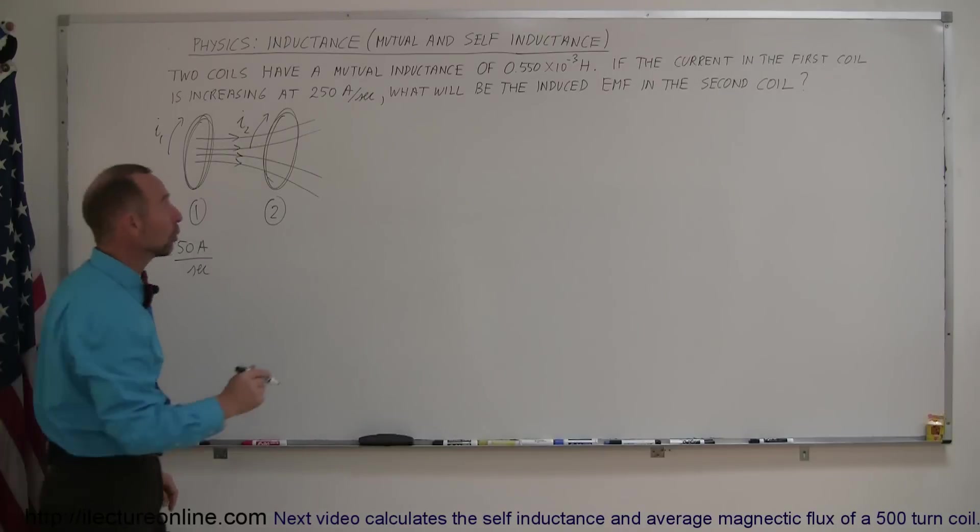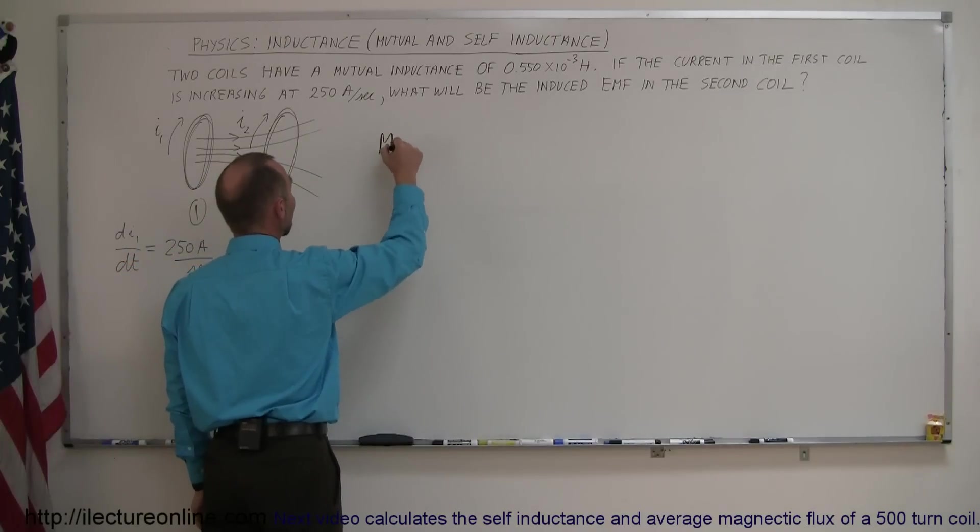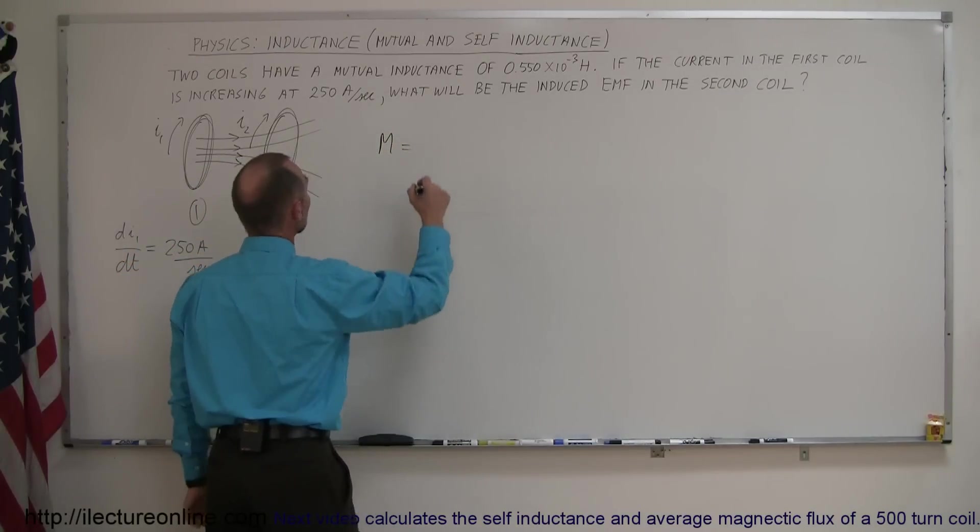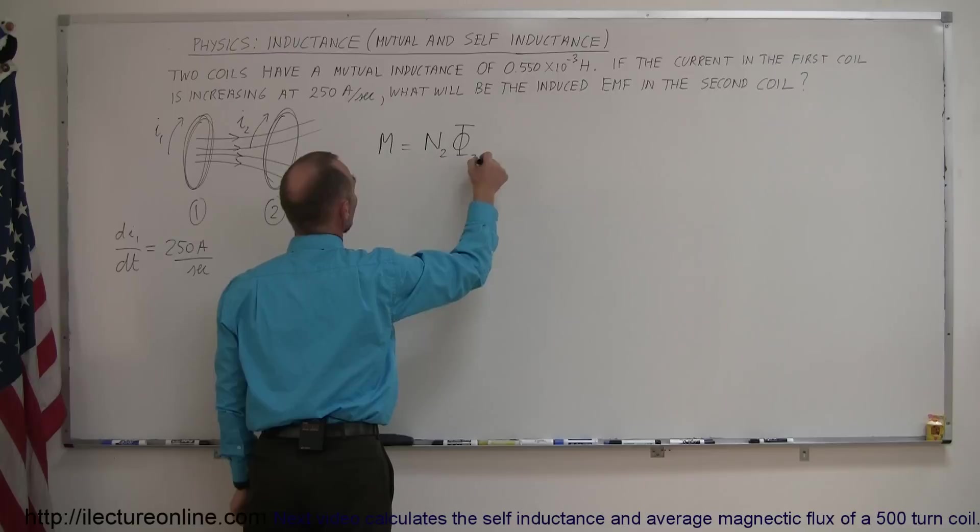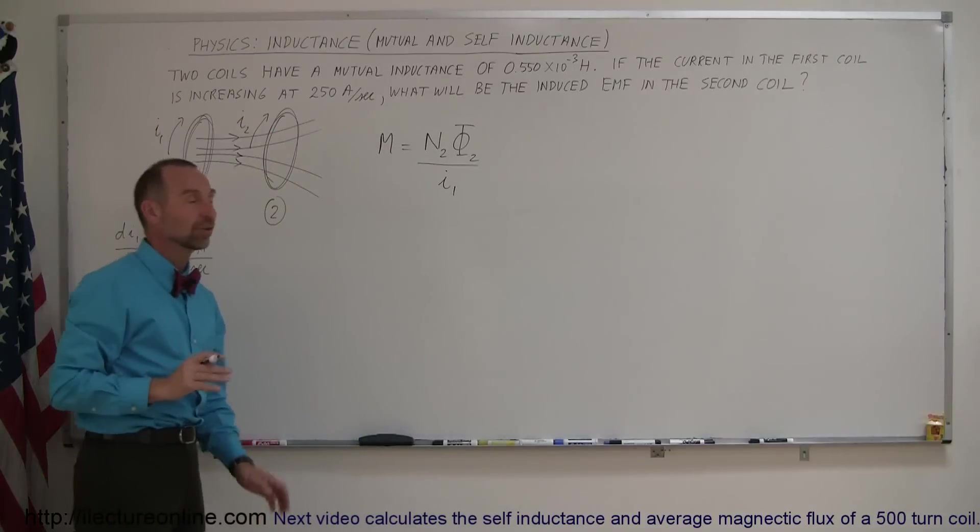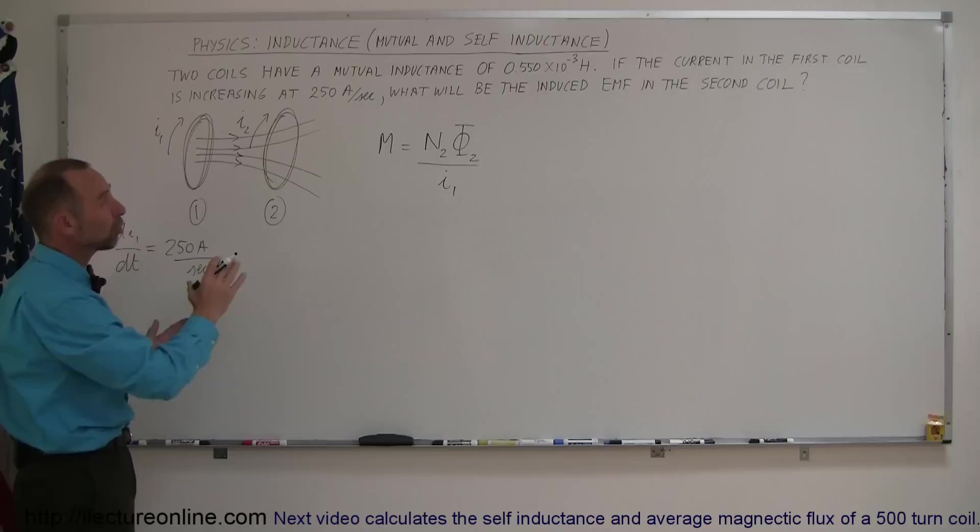And so, the mutual inductance between the two coils can be defined that M is equal to the number of turns in, let's say, coil number 2 times the flux going through coil number 2 divided by the current of coil number 1. So, that's the mutual inductance, but they already told us what the mutual inductance is so we don't have to calculate it.